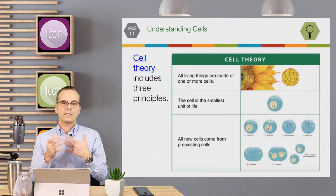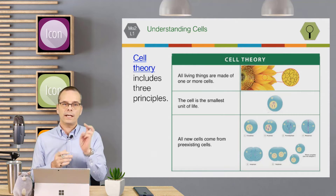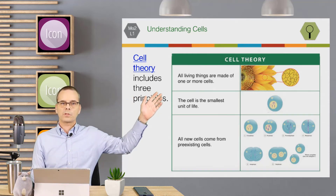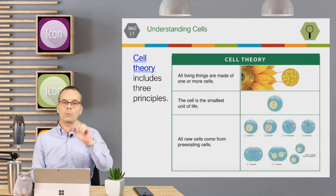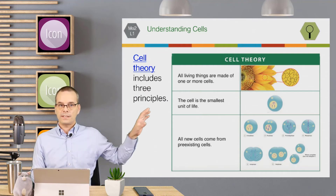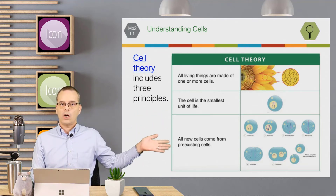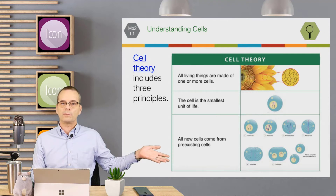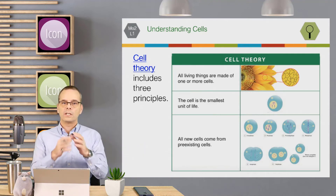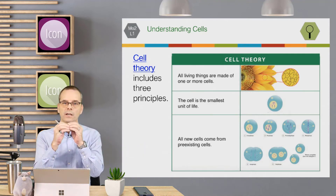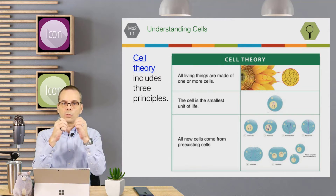All this led to cell theory. Cell theory has three principles: all living things are made of at least one or more cells; cells are the smallest unit of life; and all new cells come from pre-existing cells. So cells actually make other cells — in the cell cycle, one cell becomes two cells.